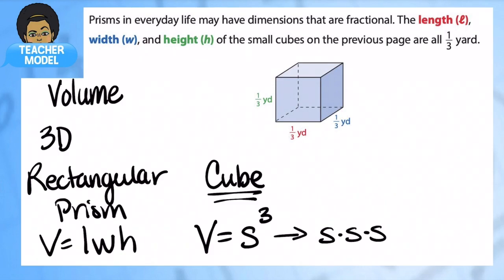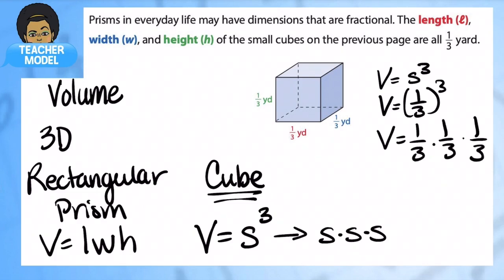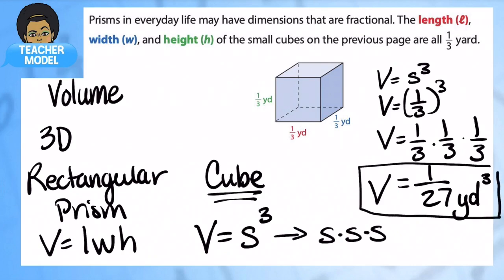For example, in this case I have this nice little cube. I would write down the formula and this is one-third cubed, or one-third times one-third times one-third. I multiply my numerators, I get 1, and 3 times 3 is 9, 9 times 3 is 27. So my volume is equal to 1 over 27. Now because I have three dimensions, I'm going to put yards to the third power - cubic yards.